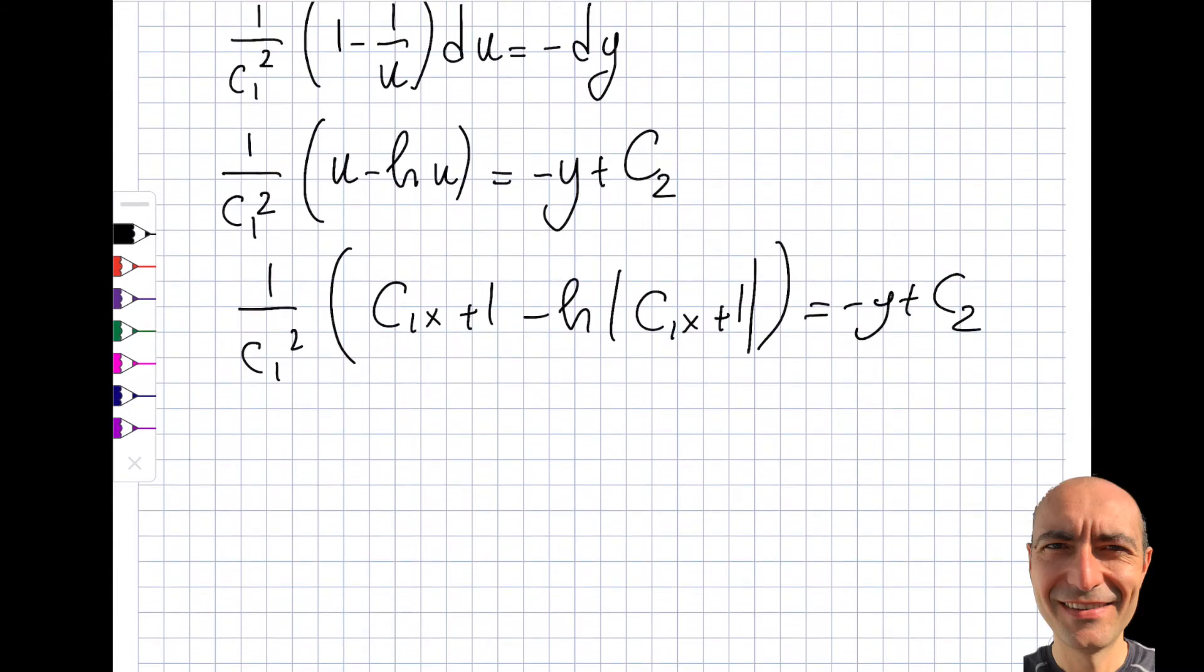Now I'll insert what u was. So let's go back and do it. 1 by c1 square times c1x plus 1 minus ln c1x plus 1 is equal to minus y plus c2. I want to leave y alone, I want to have an explicit solution. So y will be equal to, I'm moving this to the other side, this whole thing to the right-hand side. And let me play around a little bit. So it's going to be minus x by c1. So I simply, c1 square c1, so I get myself that. Actually, let's do this so I can write this way. Plus 1 by c1 square minus ln c1x plus 1. And then let's not forget the c2, plus c2.